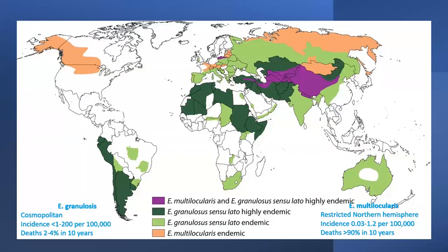Echinococcus multilocularis is restricted to North American regions, particularly central and northern US, Canada, and Alaska. The incidence doesn't go very high — up to about 1 to 1.5 percent. However, wherever the disease occurs, the 10-year death rate if untreated is as high as 90 percent because of the invasive nature of the disease.